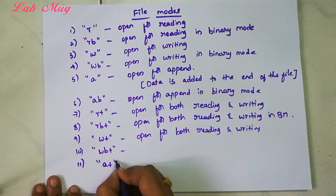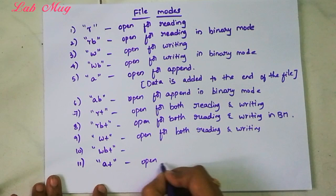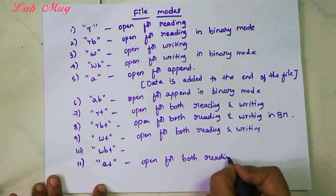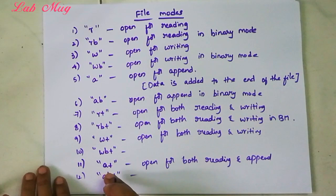Next, eleventh one is A plus. Here A means appending. Already existing content we just add to it. Here A plus means we read the already existing content and append. So open for both reading and appending. Next same again we have AB - binary mode format for both reading and append. That means called AB.